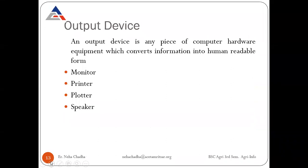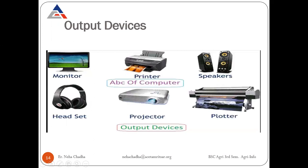An output device is any piece of computer hardware equipment that converts information into human-readable form. Examples include monitors, printers, plotters, and speakers. Plotters produce large-size printouts — for example, flags or large banners are generated using plotters, not regular printers. Other output devices include headsets and projectors.